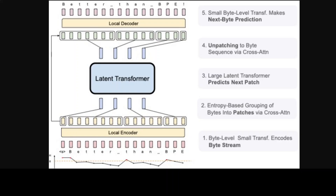Looking at the diagram, BLT comprises three modules: first, a lightweight local encoder that encodes input bytes into patch representations; second, a computationally expensive latent transformer that operates over patch representations; and third, a lightweight local decoder to decode the next batch of bytes. BLT incorporates byte n-gram embeddings and a cross-attention mechanism to maximize information flow between the latent transformer and byte-level modules. Unlike fixed vocabulary tokenization, BLT dynamically groups bytes into patches while preserving access to byte-level information.